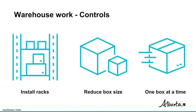A warehouse worker might have to repetitively lift heavy boxes off the ground and place them on a cart at waist level. An example of an engineering control would be the installation of racks to store the boxes off the floor to eliminate the need for an awkward posture. The repetitive motion hazard might still be present, but eliminating awkward postures makes it less likely to cause MSDs. An additional engineering control would be to reduce the volume or size of the boxes to make them less heavy. You might also implement an administrative control that requires only one box can be moved at one time, reducing the need for higher forces.